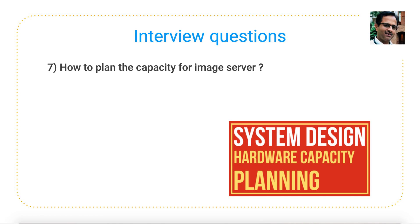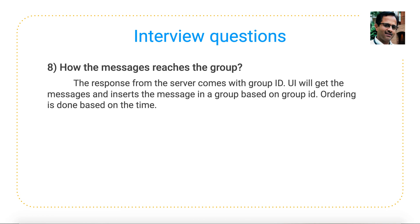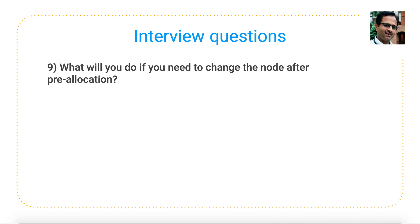The seventh question is how to plan capacity for the image server — I've already discussed hardware capacity planning for system design in a separate video, which I'll link in the description. The eighth question is: how do messages reach a group? Joe sends a group message, it goes to the database which identifies all users within the group, and the node starts sending messages to different group members. On the UI side, based on the group ID from the response, the UI determines which group to display the messages in — that's how you see messages in a WhatsApp group.